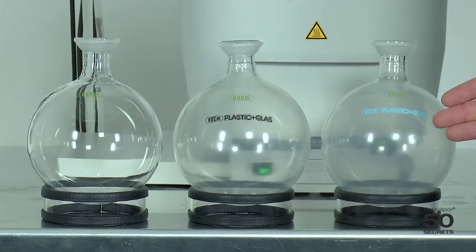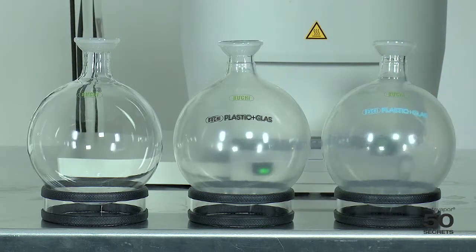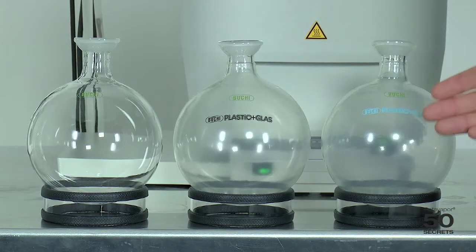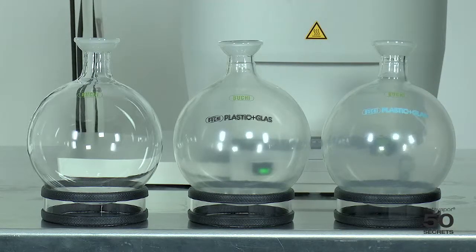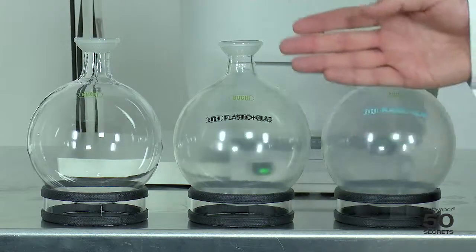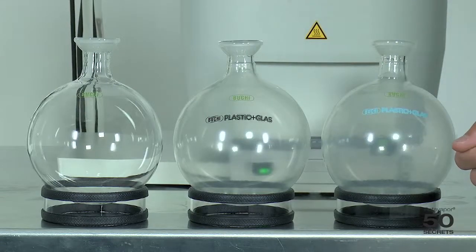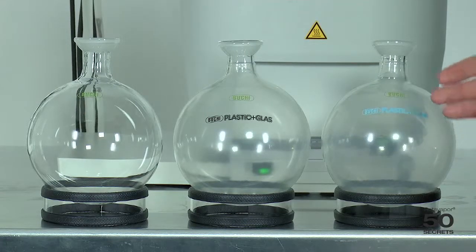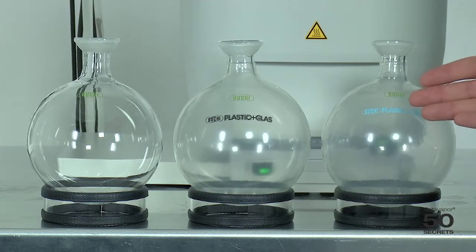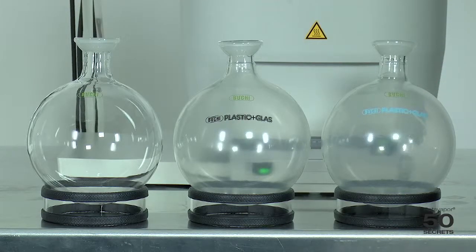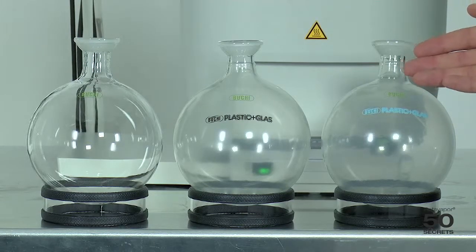And the one on the very right is as well a plastic and glass coating, but this is called PNGLT. LT stands for low temperature. The operating range on the standard coating is from minus 30 to plus 60 degrees, and the low temperature is from minus 70 to plus 40 degrees. This is used especially for cold traps.